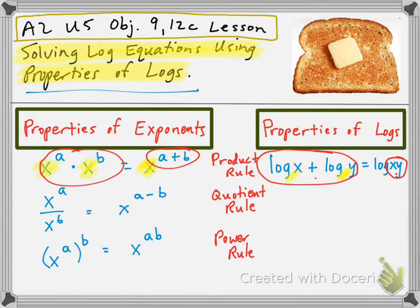And then when we see, we'll go ahead and down here and look at the next property, the quotient rule, when we have a quotient of two powers that are the same, or the bases are the same, x to the a divided by x to the b, x to the a minus b. And then if we have log of x minus log of y, we get log of x divided by y.